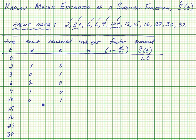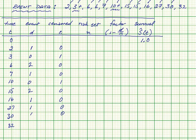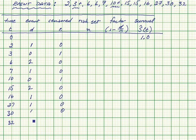At fifteen, two events, none censored. At sixteen, one event, none censored. At twenty-seven, one event, none censored. At thirty, one event, none censored. And finally at thirty-two, one event, and none censored.